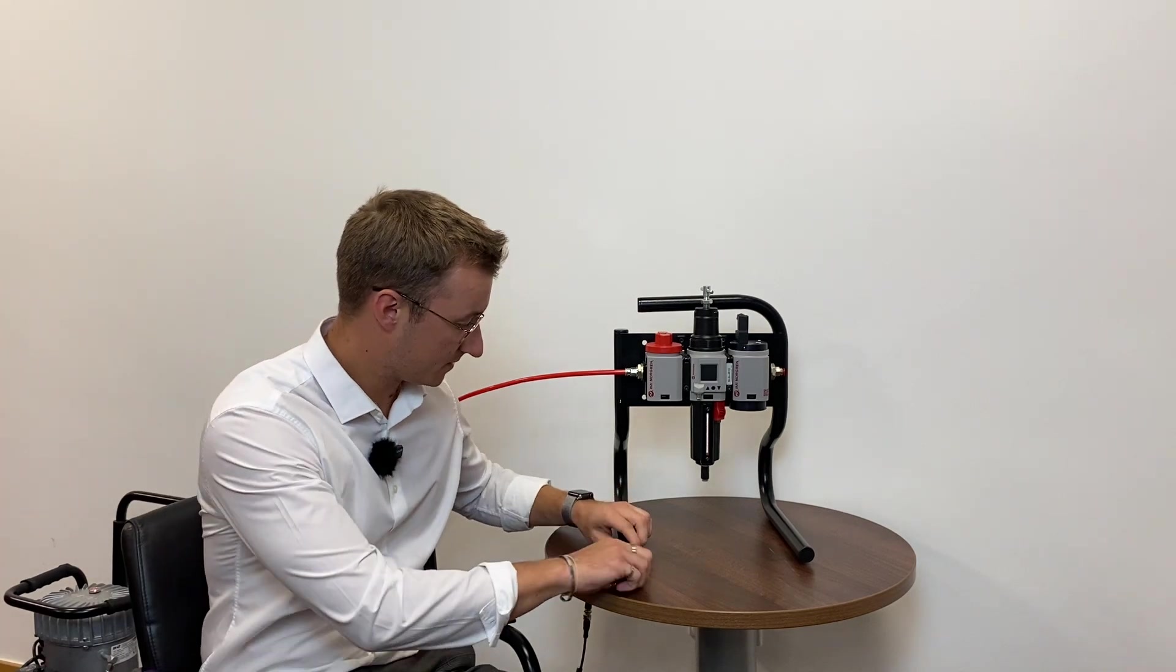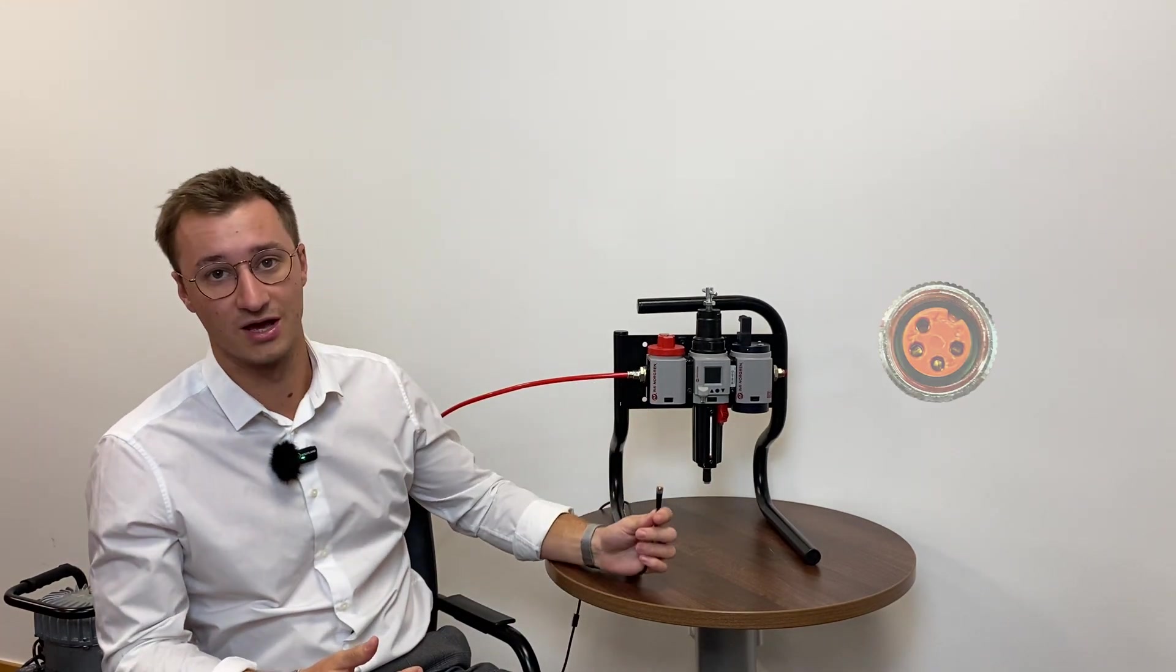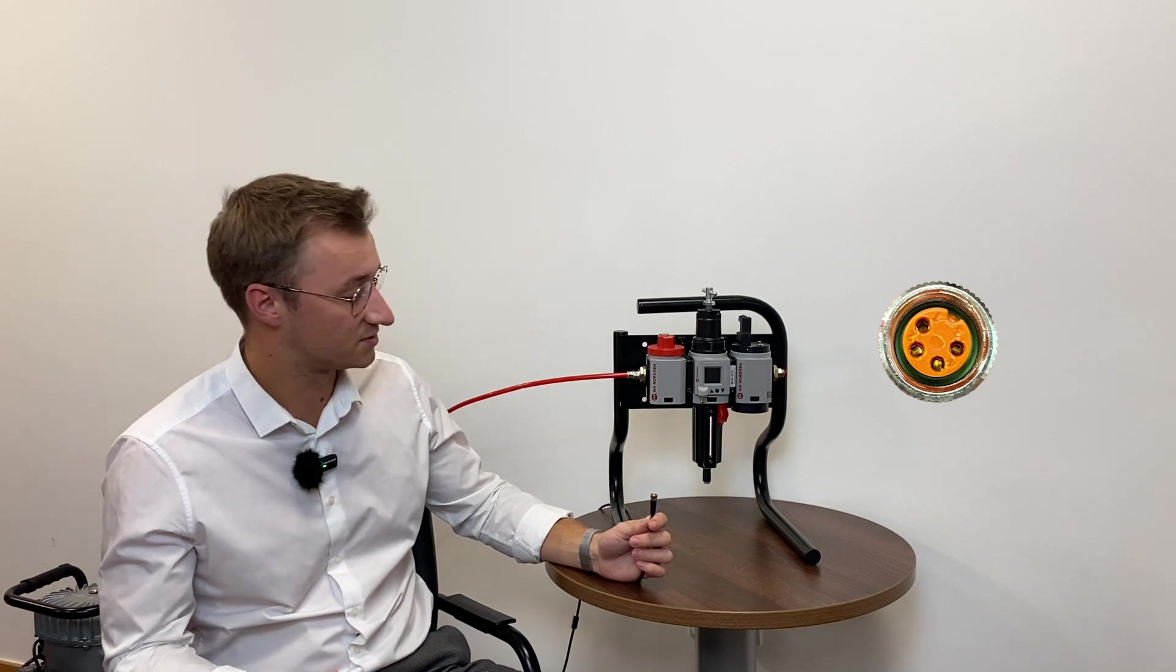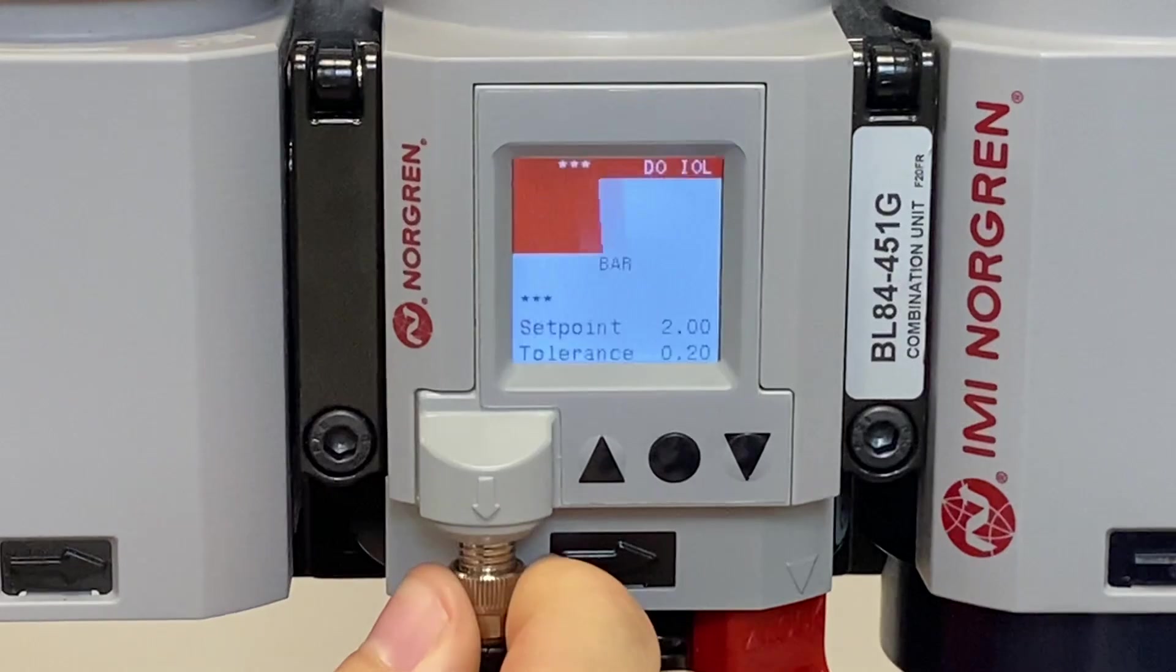So to begin with, what I've got here is an M8 connector. We've got it connected with an M12 cable with an M8 to M12 adapter, and that plugs in just here into our pressure sensor.